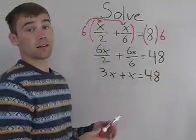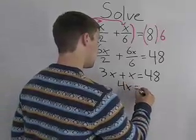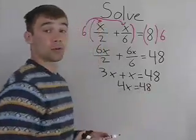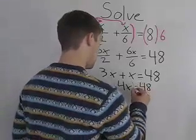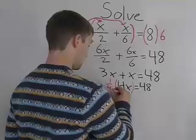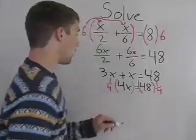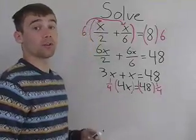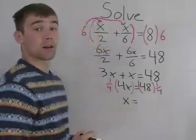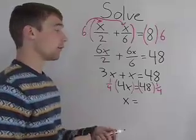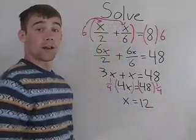So 3x plus x can be added together to get 4x, and it's still equal to 48. Now we want to multiply both sides by 1 fourth. We multiply 4x by 1 fourth and we're just left with x. And 48 times 1 fourth — well, 1 fourth of 48 is 12 — so x equals 12, and that's the final answer.